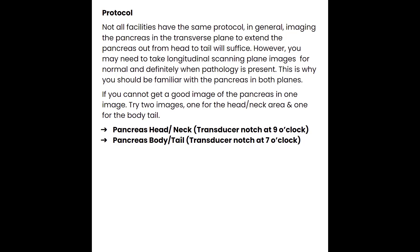As far as protocol goes, in general you need a picture of the pancreas in the transverse plane on the body — often labeled 'transverse pancreas' even though we have the pancreas completely elongated out. If the head/neck and body/tail don't sit well in the same plane, it's okay to take a focused picture at the body and tail and a focused picture at the head and neck. The notch of the transducer at the nine o'clock position images the head and neck in true transverse; for the body and tail, oblique the notch down to the seven o'clock position to elongate the tail, since the pancreas sits obliquely in the body.